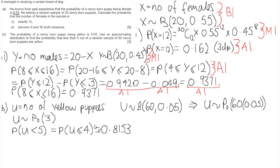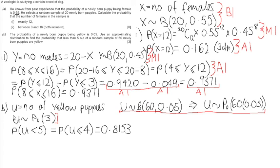How do we get our marks in this question? We get a method mark and an accuracy mark for showing the full statement: that U is distributed binomially with n = 60 and p = 0.05, and that this can be approximated by U distributed as Poisson with mean 3. This entire statement is worth one method mark and one accuracy mark.